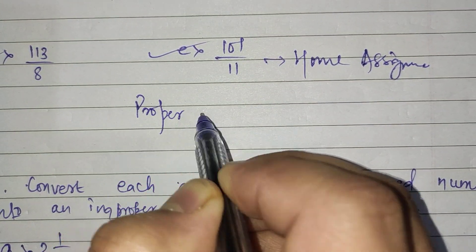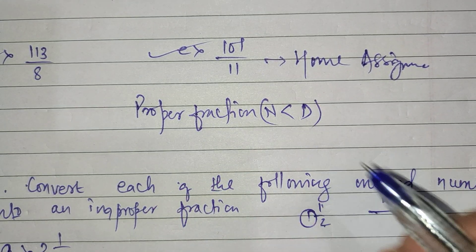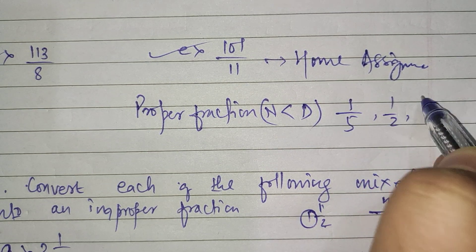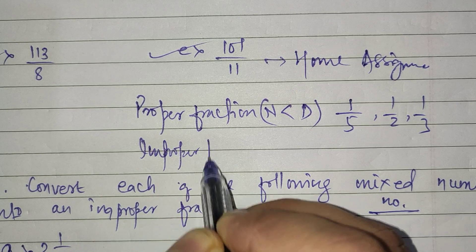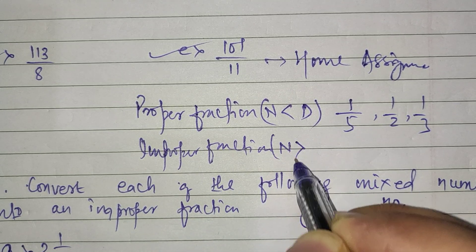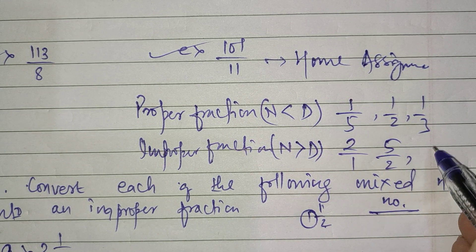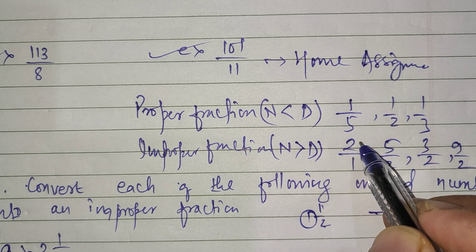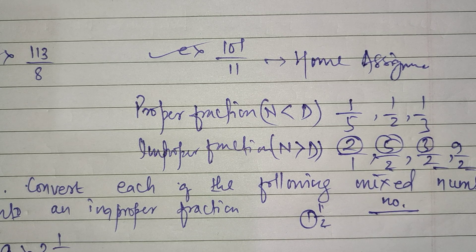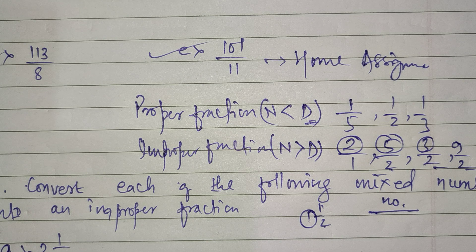A proper fraction has the numerator always smaller than the denominator — for example 1 by 5, 1 by 2, 1 by 3. An improper fraction is totally opposite: the numerator is always greater than the denominator — for example 2 by 1, 5 by 2, 3 by 2, 9 by 2. You can see numerator is greater than the denominator.